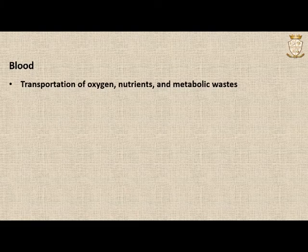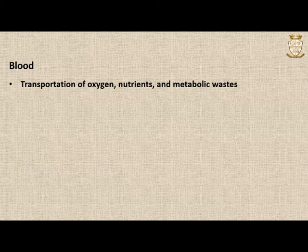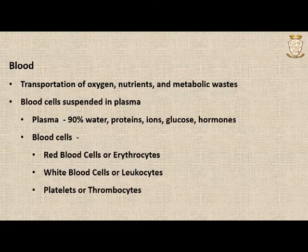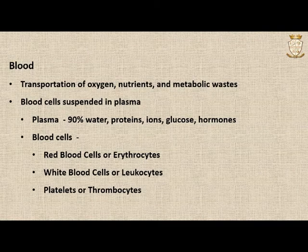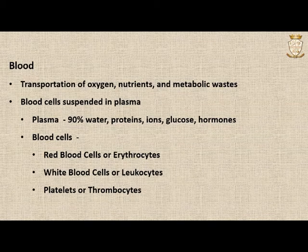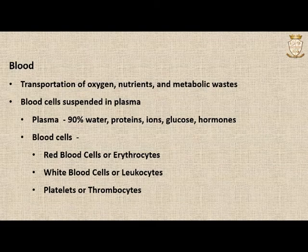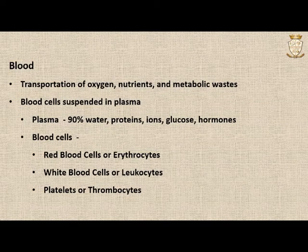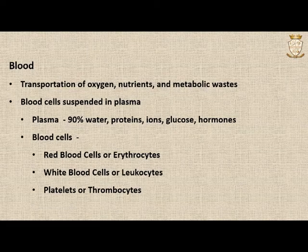Blood helps in the transportation of oxygen, nutrients and metabolic waste to and from different parts of the body. It is composed of blood cells suspended in a fluid known as plasma. Plasma is more than 90% water and contains various molecules such as proteins, ions, glucose, hormones, etc. There are three major types of blood cells: red blood cells or erythrocytes, white blood cells or leukocytes, and platelets or thrombocytes.